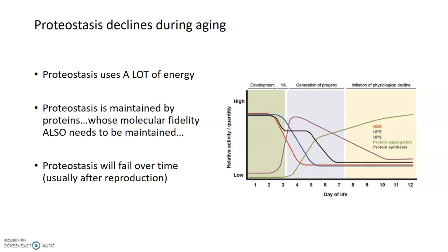Supporting protein synthesis, sorting, trafficking, folding, as well as protein maintenance and degradation requires a lot of energy. Proteostasis is also maintained by proteins whose molecular fidelity therefore also needs to be maintained, which poses a big problem. Over time, this huge energy requirement — combined with the fact that proteostasis is itself maintained by proteins — means it will ultimately likely fail, because there won't be enough energy and those proteins will lose their own integrity.